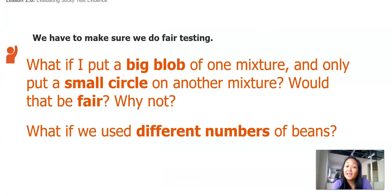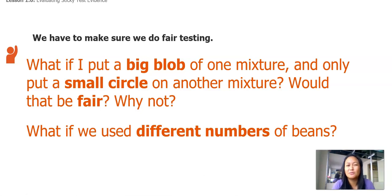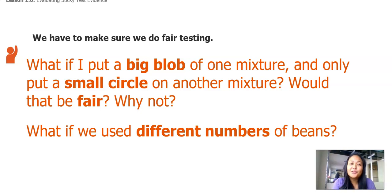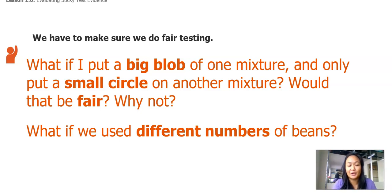We have to make sure that we're doing a fair testing. So I want you to think about these questions. What if I put a big blob of one mixture and only put a small circle on another mixture? Will that be fair? Why or why not? And what if we use different numbers of beans? Would that also be fair? To do a fair testing, we will try our best to make the same size blob for each mixture, and we'll also put the same number of beans for each one. Remember, we're putting 10 beans this time.